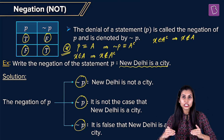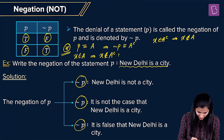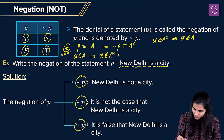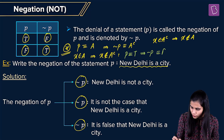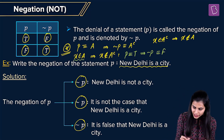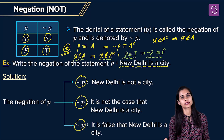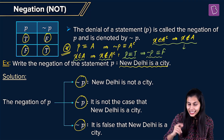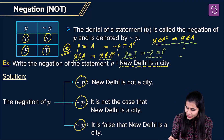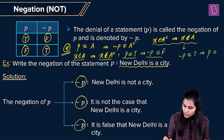Interpreting this in terms of statements: if P is true — meaning X belongs to A — then negation P is false, because X doesn't belong to A complement. Similarly, if negation P is true — X belongs to A complement — then P is false, meaning X doesn't belong to A.